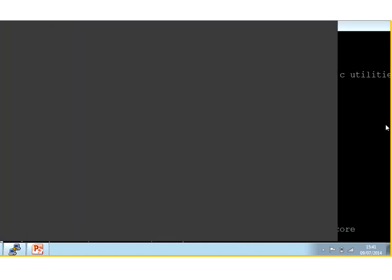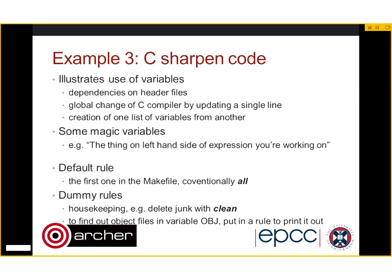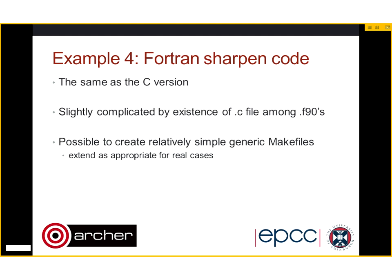There is a Fortran version which is effectively the same as the C one, just with a few renamings. It's slightly complicated by the existence of a single .c file among .f90 files, but it's not a big deal. I'll put these files online, hopefully this afternoon, definitely by tomorrow morning.